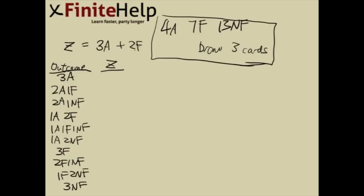And then here you have Z, which is defined to be 3 ace plus 2 face card. So now simply just take the outcome and substitute it. Here we have 3 aces: 3 times 3 is 9. We have 0 face cards, so 9 plus 0. This is going to be 9.